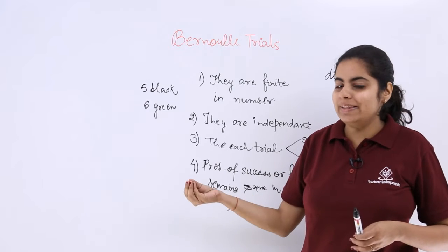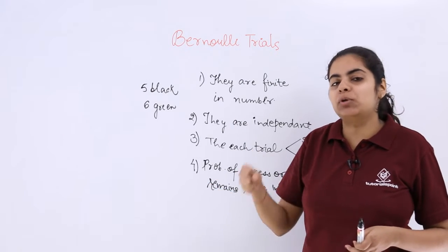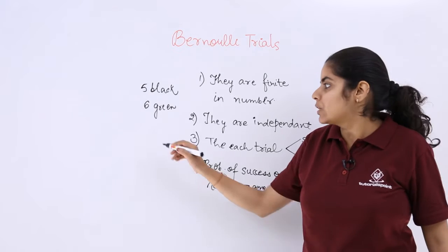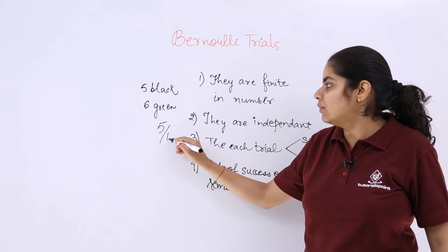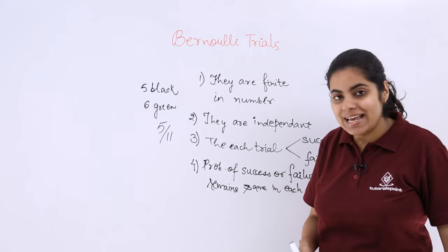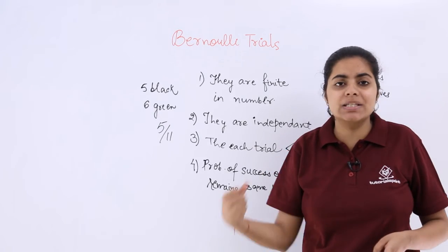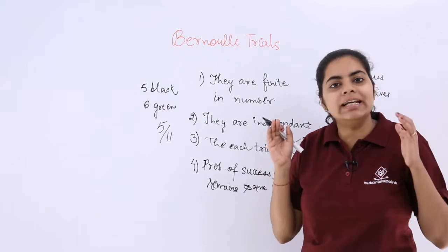Now what we are thinking of is we are finding the probability of taking out a black ball. So that becomes 5 over 11.